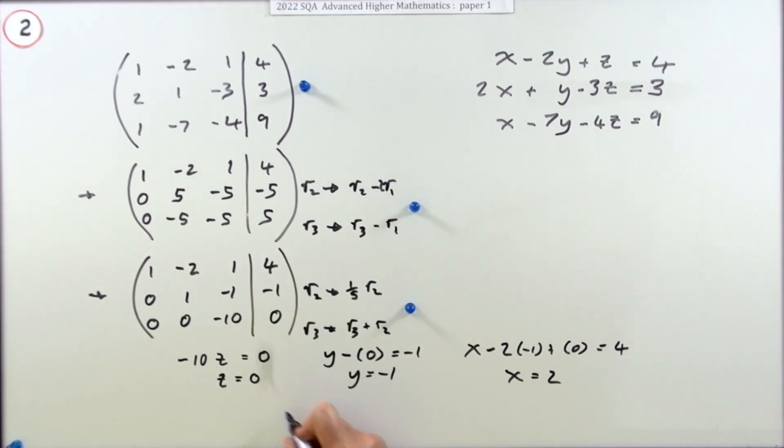That says I've got one lot of x minus two lots of y, but y is -1, plus one lot of z, but z is 0, and that should come to 4. Well that just says x equals 2. I'll just put them in order: x equals 2, y equals -1, z equals 0, and there's the final mark.